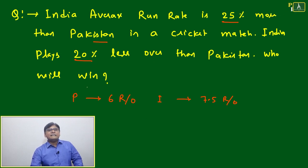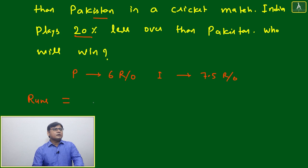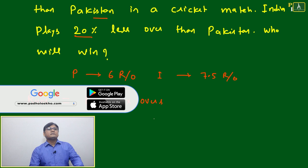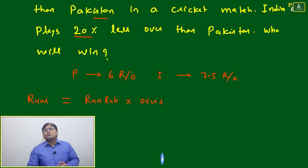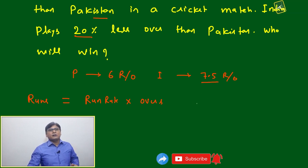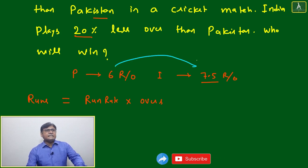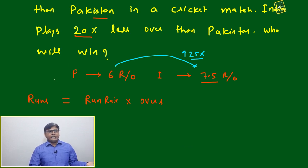Looking at run rate alone, it seems India will win — but India plays 20% fewer overs than Pakistan. We need to calculate total runs. Total runs for any team equals run rate multiplied by overs. Even if Rohit Sharma hits sixes in one hour, the overall run rate averages out — we use run rate into number of overs for total runs.